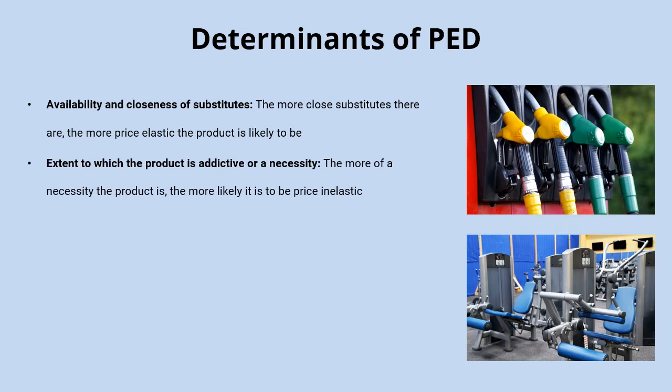It's also affected by the extent to which a product is addictive or a necessity. Petrol is quite a necessity for people who need to get to work with no other option. Similarly, products like cigarettes and alcohol are more likely to be price inelastic because of their addictive nature. Products that aren't really needed — like gym memberships — are more likely to be price elastic. So the more of a necessity a product is, the more likely it is to be price inelastic.